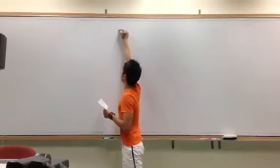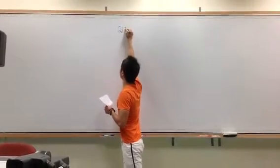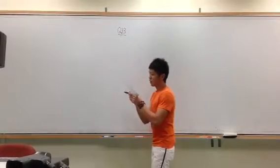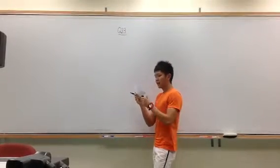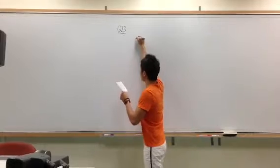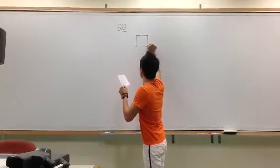Okay class, today I'm going to go through question 23. If you take a look at the question, they say that A is a tank with dimensions of 10, 15, and 9.